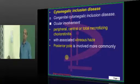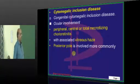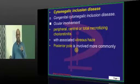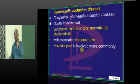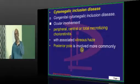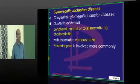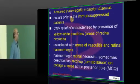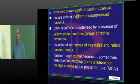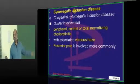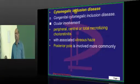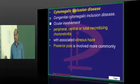CMV also leads to the vitreous becoming hazy. We have drawn an equator in the retina - whatever is inside the equator is the posterior pole. The posterior pole is the area most commonly involved in CMV. This is the story of congenital CMV. CMV is one of the group of TORCH infections - Toxoplasma, Herpes, Cytomegalovirus, Syphilis, etc.